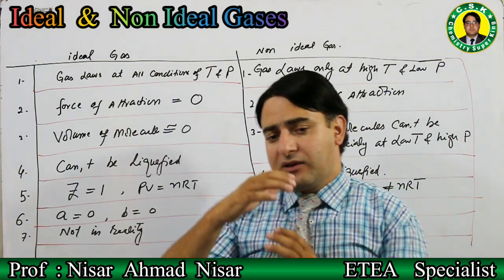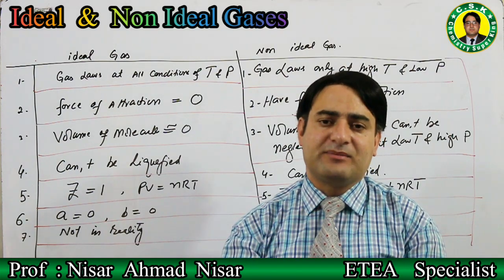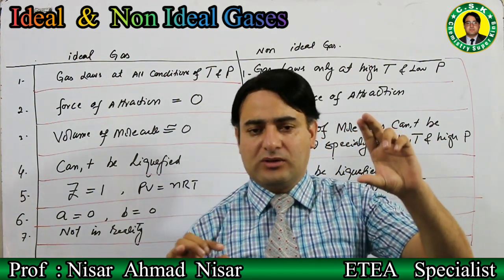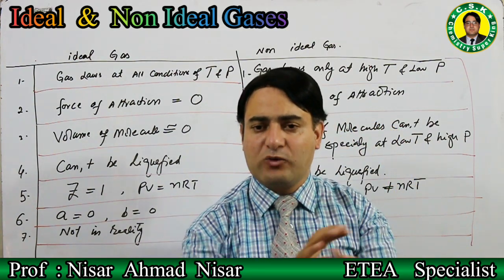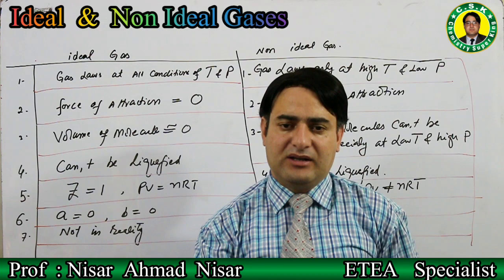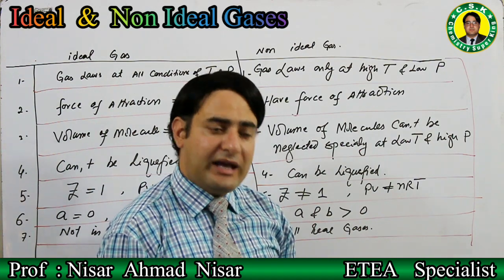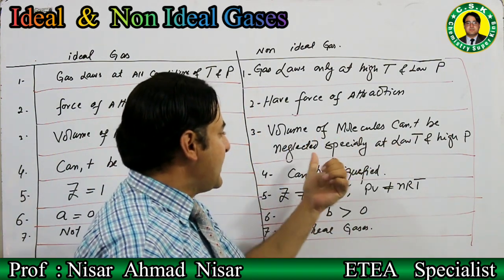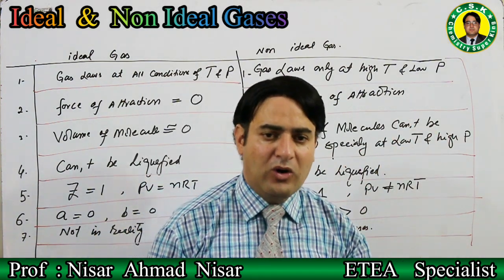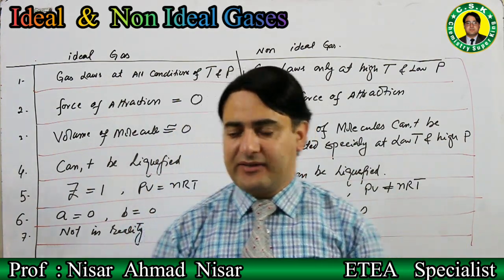The third difference: the volume of molecules of an ideal gas is negligible — almost zero — compared to the volume of the gas. Whether the volume of gas molecules is included or not makes no difference. Volume of gas molecule is almost zero in ideal gas. Whereas in real or non-ideal gases, the volume of molecules cannot be neglected — especially when temperature is low and pressure is high.